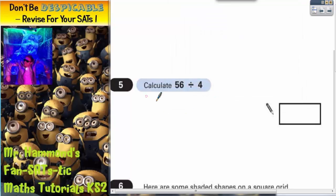Question number 5. Calculate 56 divided by 4. There are two ways you can do this.